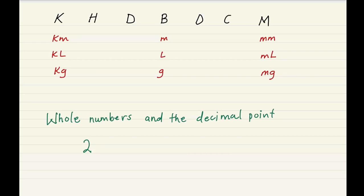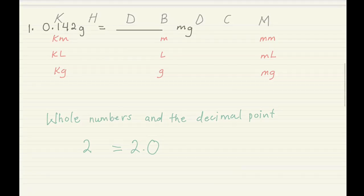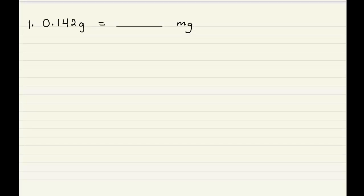Before I start the questions, let me explain: when you have a whole number, like 2, you might be wondering where the decimal point is. Always remember that the decimal point is behind the last number for a whole number. So 2 can also be written as 2.0 — the decimal point is there, it's just imaginary. Whenever you have a whole number, know the decimal point is behind the last digit.